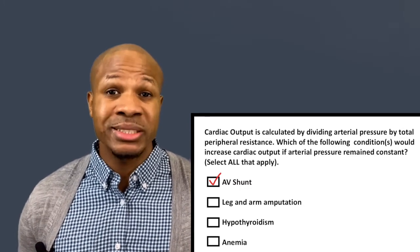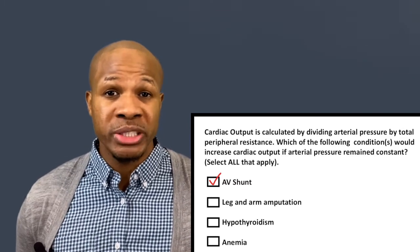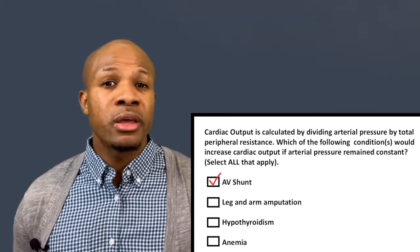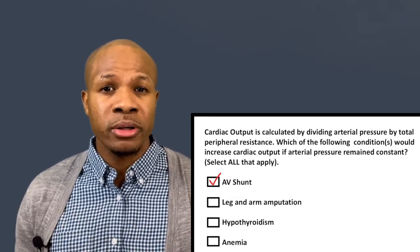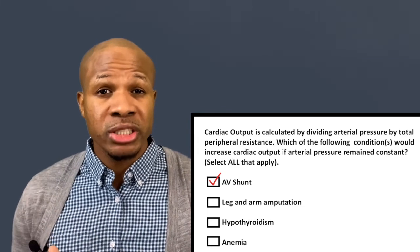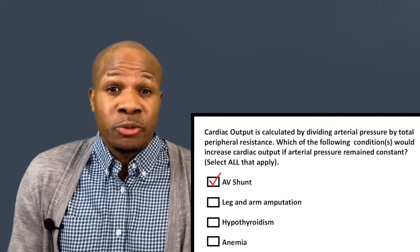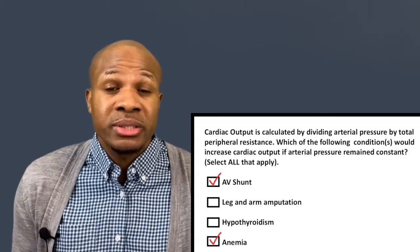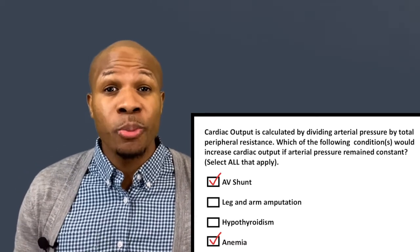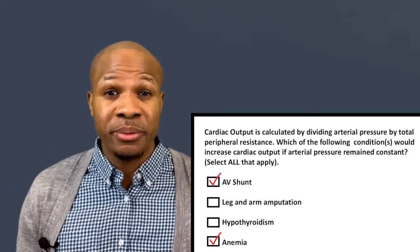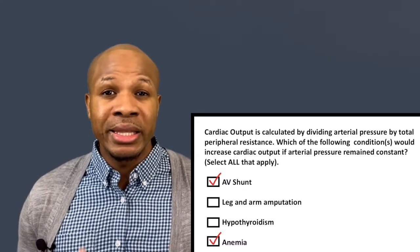Answer choice D is anemia. Resistance is caused by friction between the blood and the arteries. With anemia, you have fewer red blood cells, meaning fewer particles in the blood to create friction. If there's less blood flowing, there's less resistance, and therefore cardiac output increases in anemia. So the correct answers are AV shunt and anemia.